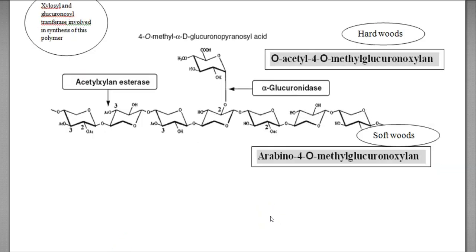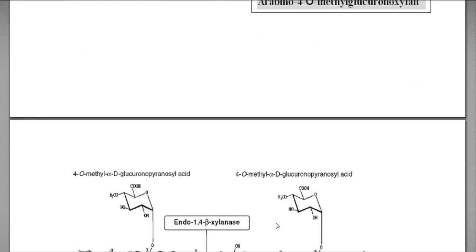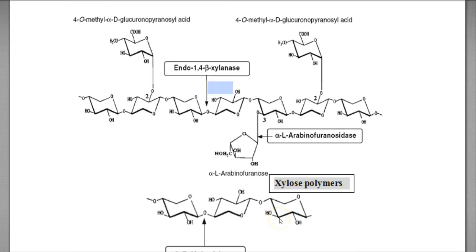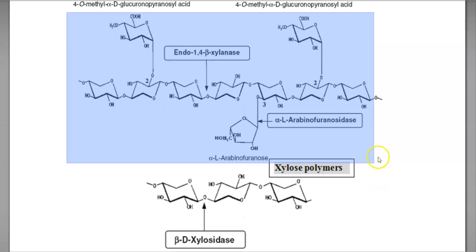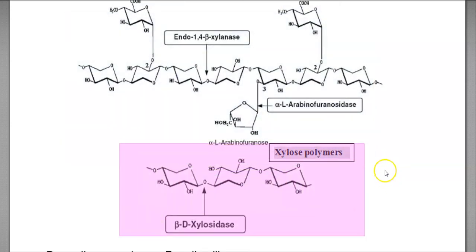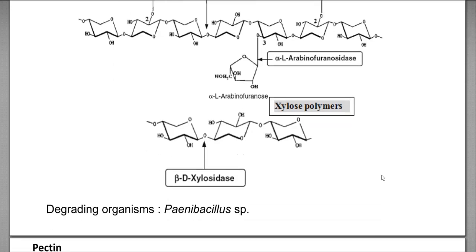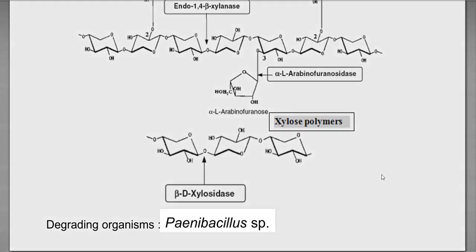Next we look at some of the enzymes that may degrade hemicellulose. Alpha-glucuronidase as well as acetyl xylan esterase are involved in the degradation of hemicellulose present in hardwoods as well as softwoods. Other hemicellulose-degrading enzymes are endo-1,4-beta-xylanase and alpha-L-arabinofuranosidase. These two enzymes are involved in hemicellulose made up of arabinofuranose. When the hemicellulose molecule is made up of a xylulose polymer, it can be effectively degraded by beta-D-xylosidase enzyme. The organism dominantly involved in the degradation of hemicellulose is Paenibacillus species.